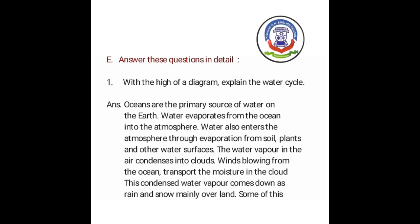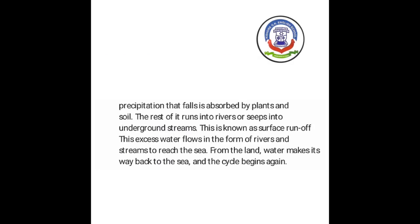Winds blowing from the ocean transport the moisture in the clouds. (Samudra se behne waali hawaaen, baadal mein nami ka parivahan karti hain.) This condensed water vapor comes down as rain and snow, mainly over land. (Yah gada jal bhaap mukhya roop se zameen par baarish aur barf ke roop mein neeche aata hai.) Some of this precipitation is absorbed by plants and soil. (Is mein se kuch varsha, paudho aur mitti dwara soak li jaati hai.)